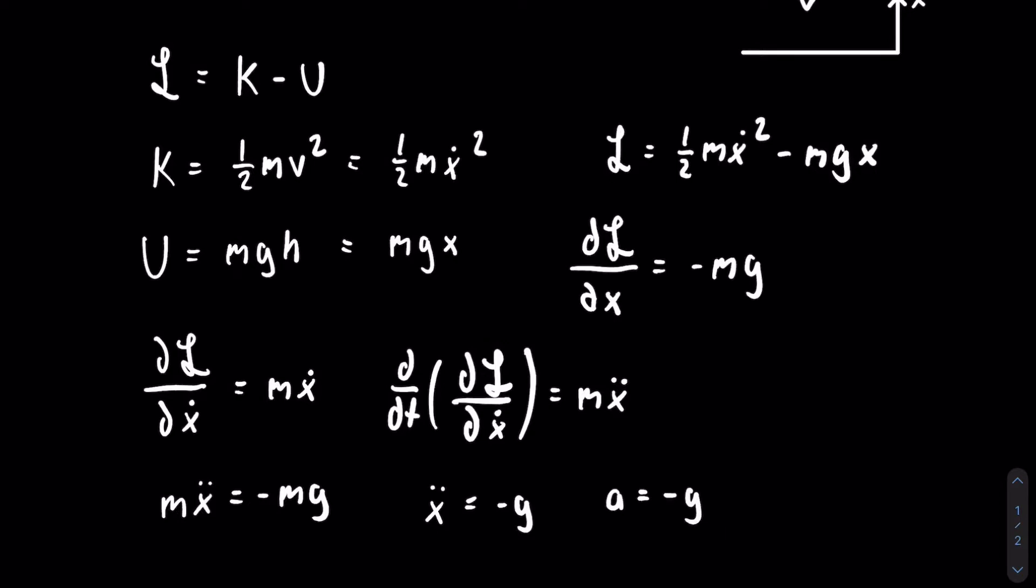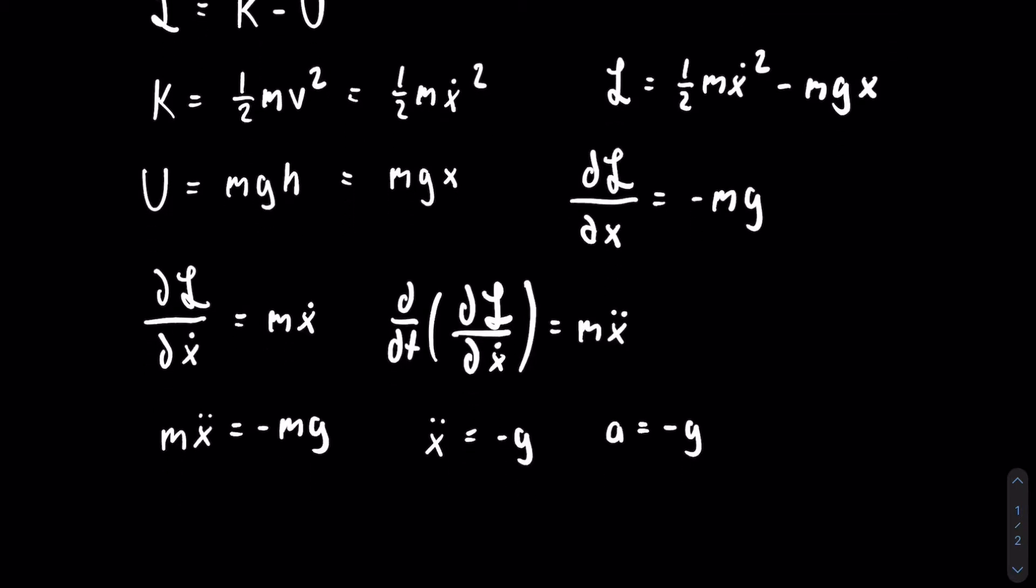From here we could take the integrals with respect to time on both sides to get the equations for velocity and then position. So the integral with respect to time of acceleration is velocity. And we will get that the velocity is equal to negative g t plus, in this case, the c, which is the constant, is just the initial velocity.